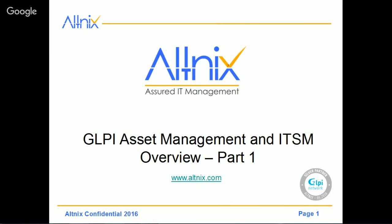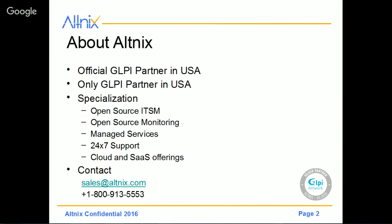Briefly, here is a little information about our company, Altnix. Altnix is an official GLPI partner in the US — in fact, it's the only GLPI partner in the US. In our service portfolio, we focus on open-source ITSM products. We also offer services for open-source monitoring tools, managed services, and 24/7 support. We also give you cloud SaaS offerings for these particular products.